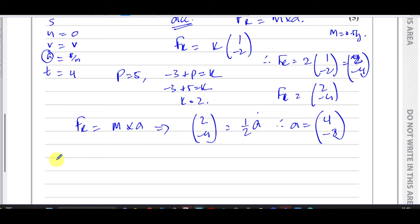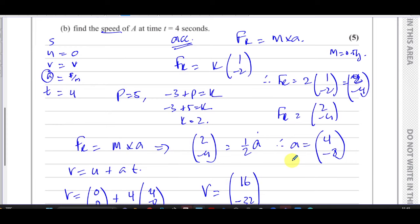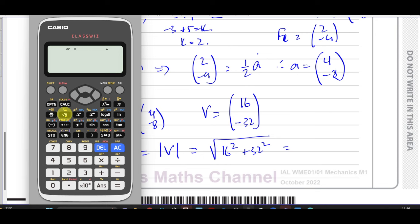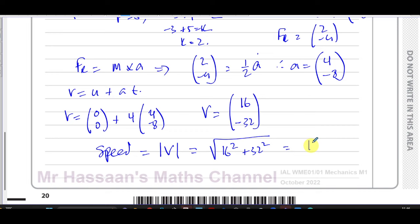So now I can find what my speed is. I can use v equals u plus at. So v equals 0, 0, plus 4 which is the time, times 4 minus 8. So the final velocity is equal to 16 and minus 32. Now they want us to find the speed. This is the velocity. The magnitude of the speed is the square root of 16 squared plus 32 squared, which gives us 16 times root 5.